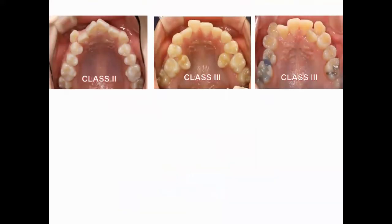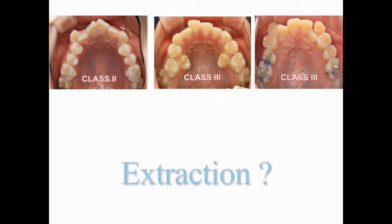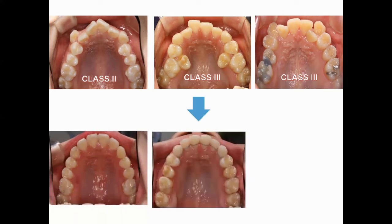Here you can see three cases. The left one is Class 2, and the two photos on the right side are Class 3. All of them had severe crowding. How would you treat these patients with severe crowding? Would you extract premolars? Actually, non-extraction treatment was done.